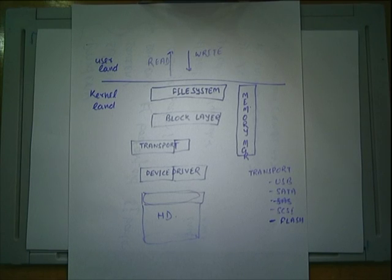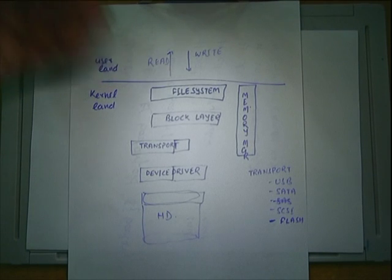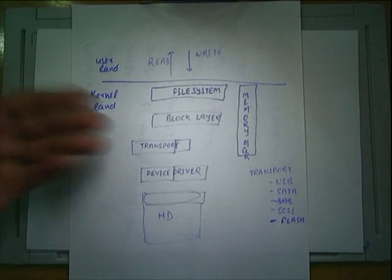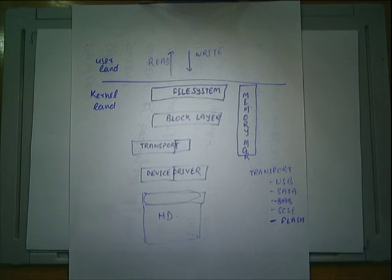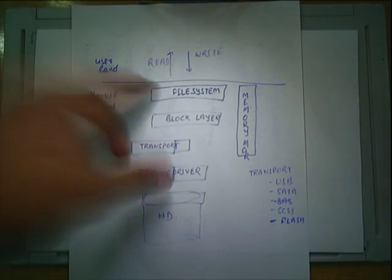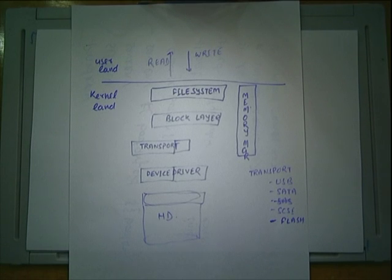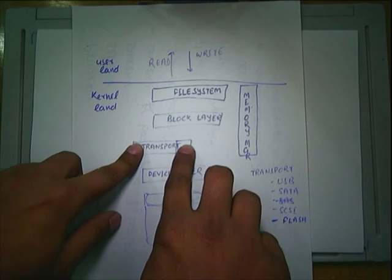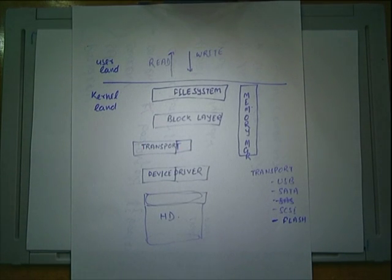When you open a file, there is a filesystem which gives you the facility to open, read, and write to a file. If you use any editor, open a file, write something, and save — the moment you save, you issue a system call called write. That write system call takes your data into a buffer and goes to the kernel.